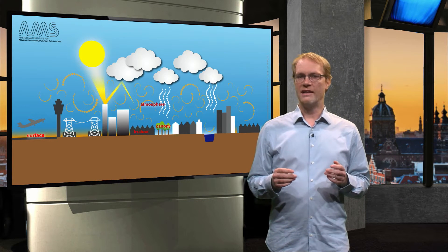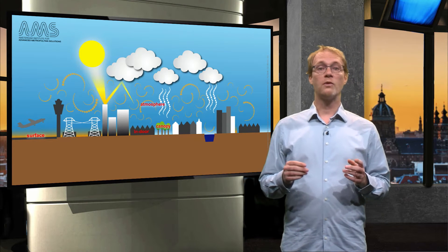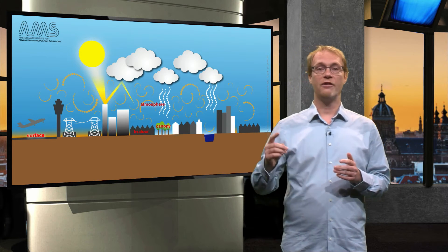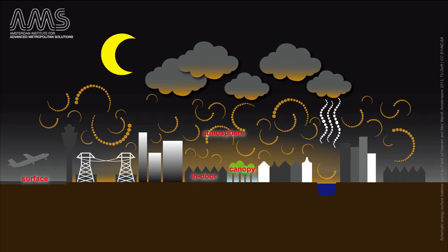You can measure the temperature difference between the city and its surroundings, but also between different places within a city at several levels and scales. You can measure the surface temperature in a city or the air temperature in the so-called canopy layer or in the atmospheric layer above the city. Very interesting is also to understand the temperature in houses, as most of the time we are actually indoors. And it is of course important whether you want to investigate day or night time temperatures.